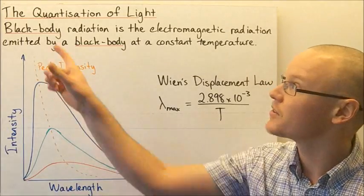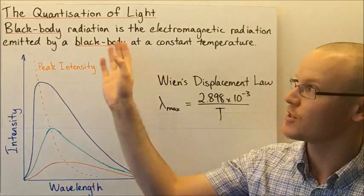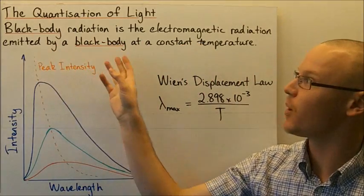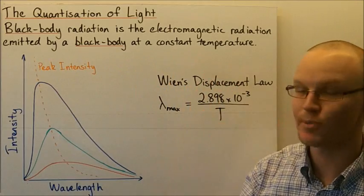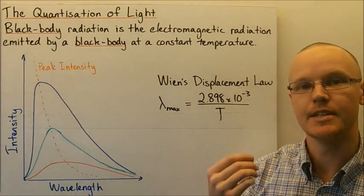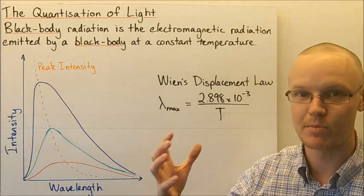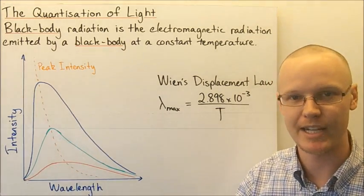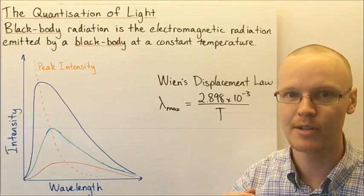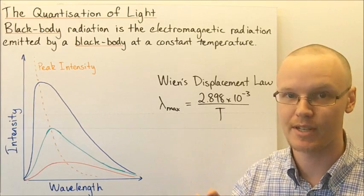Today we're going to be looking at the quantization of light. Black body radiation is the electromagnetic radiation emitted by a black body at a constant temperature. A black body is an object that absorbs all of the radiation that is incident upon it, and emits radiation according to its temperature.